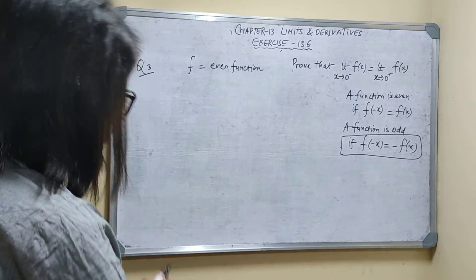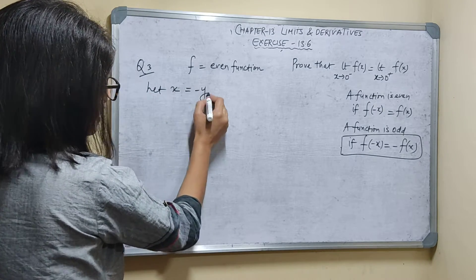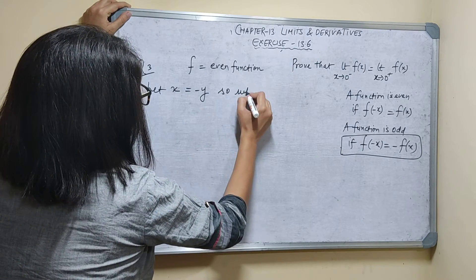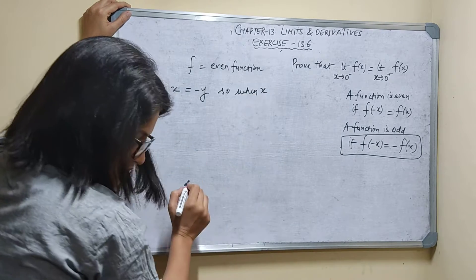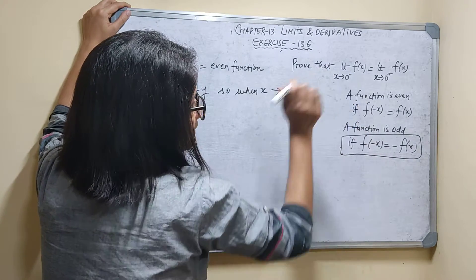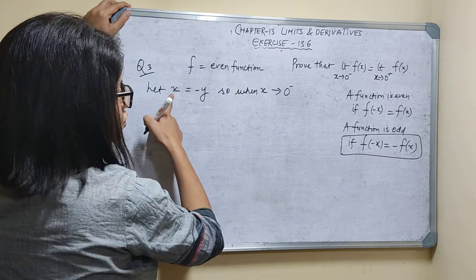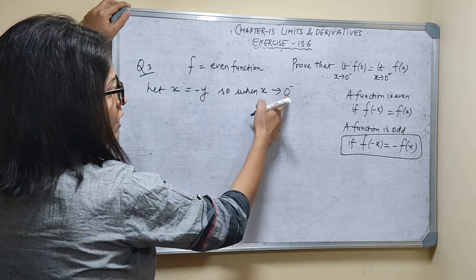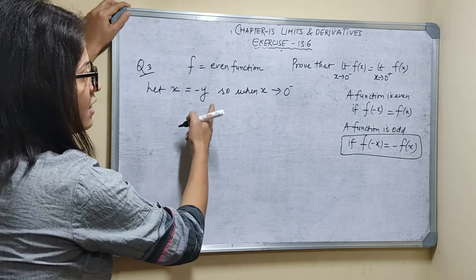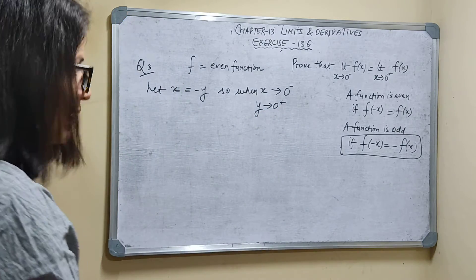So, first we start by letting x equal to minus y. When x tends to 0 minus — meaning x is less than 0 — then y will tend to 0 plus.